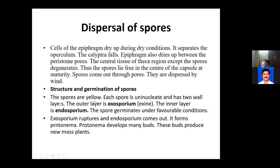The spores are yellow and uninucleate, surrounded by the outer layer called exine or exosporium, and the inner layer called endosporium. When favorable conditions return, the spores will germinate.